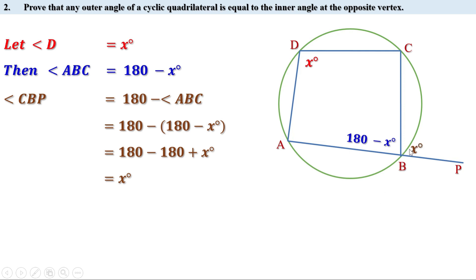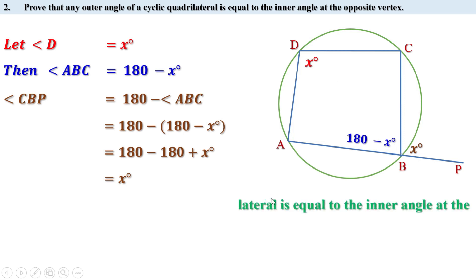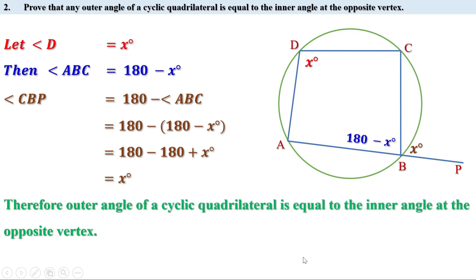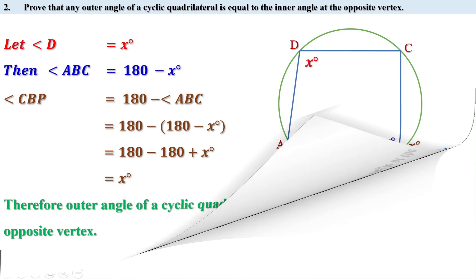That is, these two angles are equal — the outer angle of this cyclic quadrilateral equals the inner angle at the opposite vertex. So we can say the outer angle of a cyclic quadrilateral is equal to the inner angle at the opposite vertex.